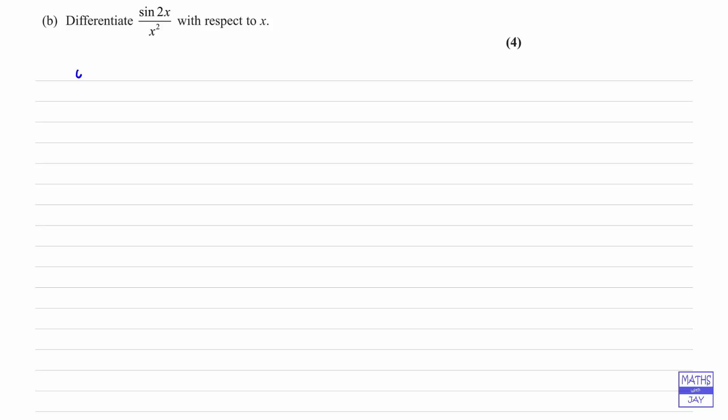Let's start by writing down y is sin 2x over x squared. It'll be a good idea to actually write down the rule that we want to use, so we want to use the quotient rule here.